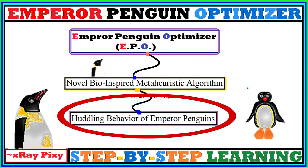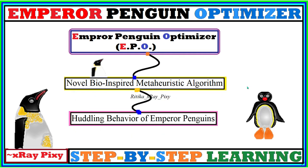The Emperor Penguin Optimizer mimics the huddling behavior of emperor penguins, and we can use this algorithm to solve both constrained and unconstrained engineering design problems. Since this algorithm mimics the huddling behavior, we will first try to understand what the huddling behavior of emperor penguins is, so that we can easily understand what this algorithm is all about and how it works.